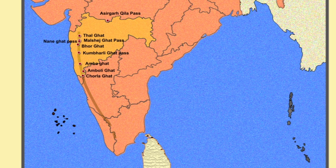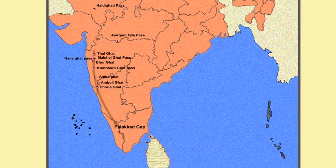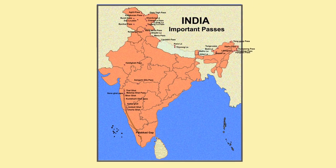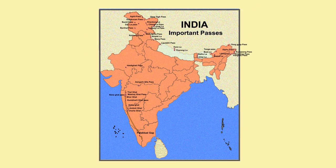Finally, when we come to the extreme south, it is Palakkad Ghat. It is a low mountain pass in the Western Ghats between Coimbatore in Tamil Nadu and Palakkad in Kerala. The pass is located between the Nilgiri hills in the north and the Annamalai hills in the south.